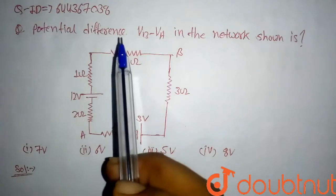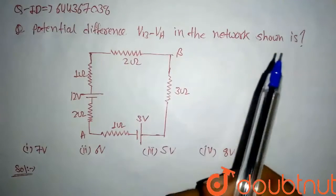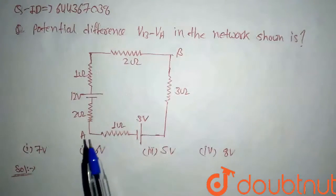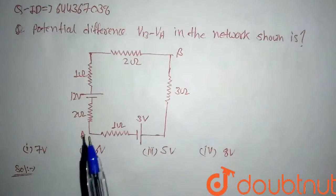Hello everyone, today we have a question: potential difference Vb minus Va in the network shown here. So we have to find potential difference of Vb minus Va.